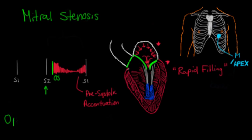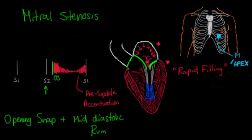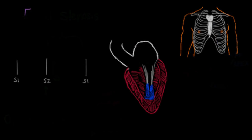This murmur is described as an opening snap followed by a mid-diastolic rumble. People say it sounds like a rumbling sound, partly because of the unusual shape — it goes down and then comes back up. The right-sided equivalent, tricuspid stenosis, produces the same murmur — an opening snap followed by a mid-diastolic rumble — but is heard in the tricuspid area.